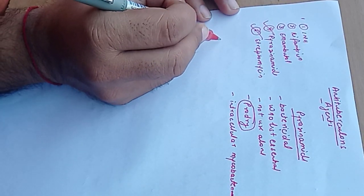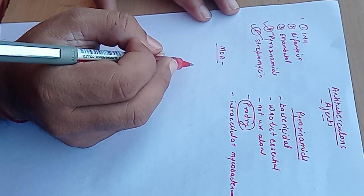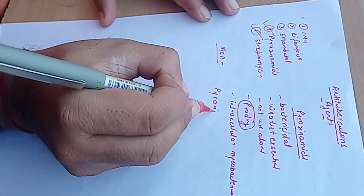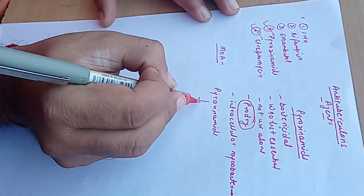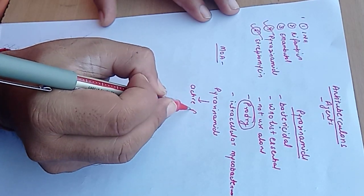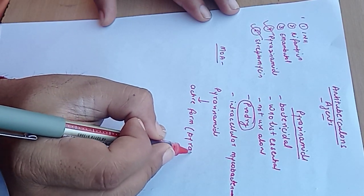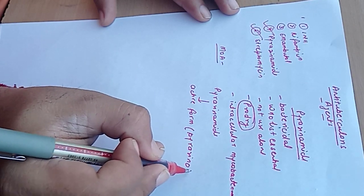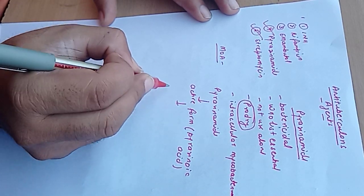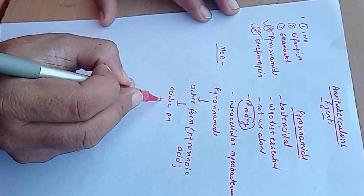Mechanism of action of pyrazinamide - how it shows bactericidal action. As I told you, it's a prodrug. Pyrazinamide is converted inside the mycobacterium into its active form, pyrazinoic acid. In acidic pH, this drug accumulates inside the bacillus.